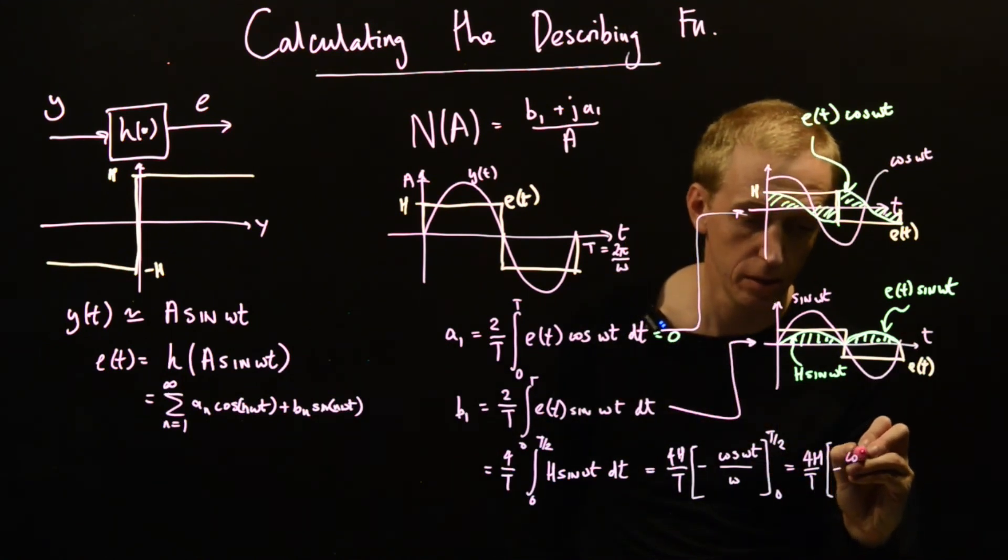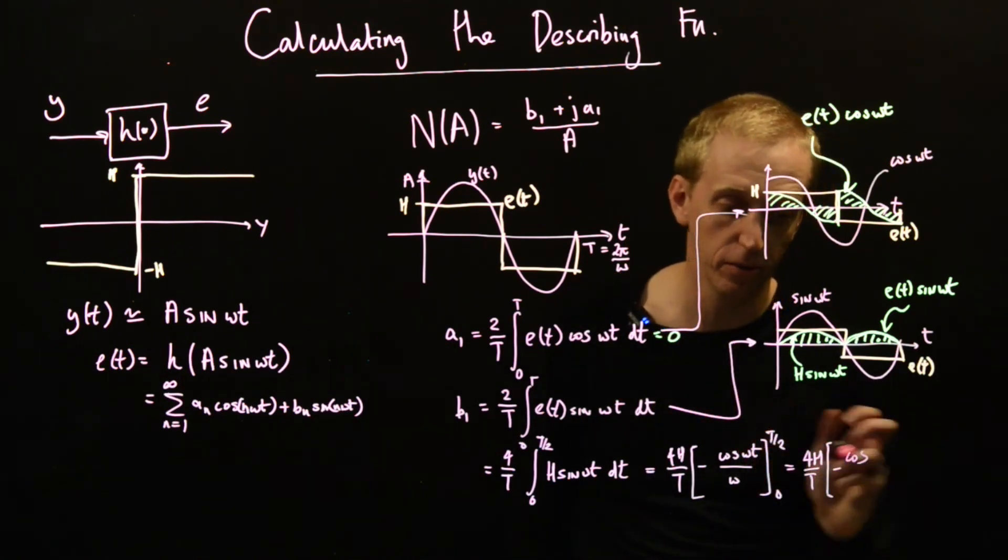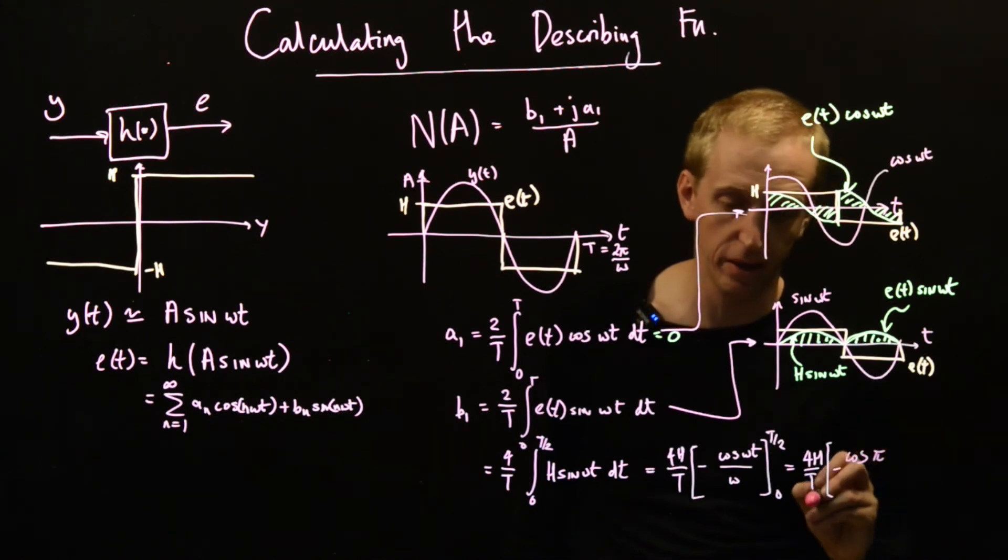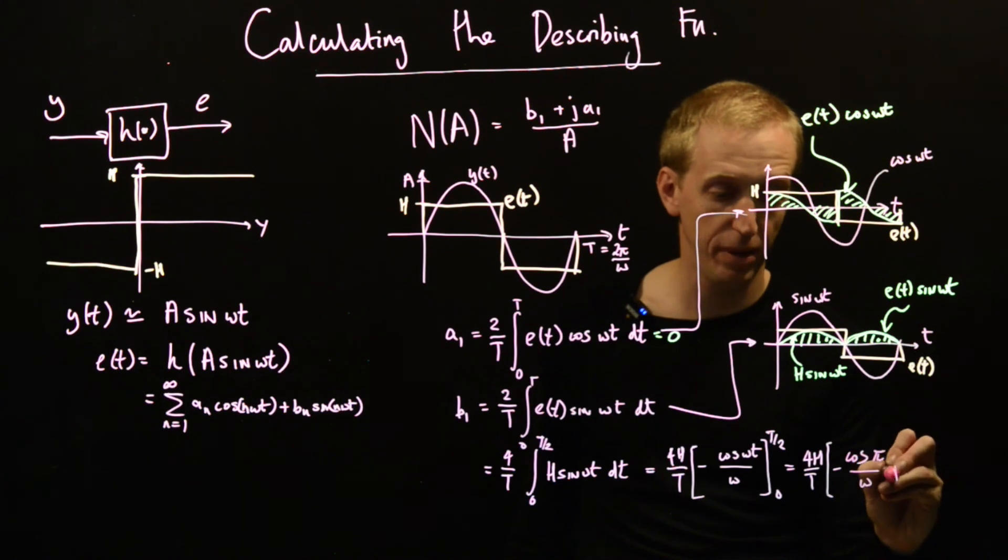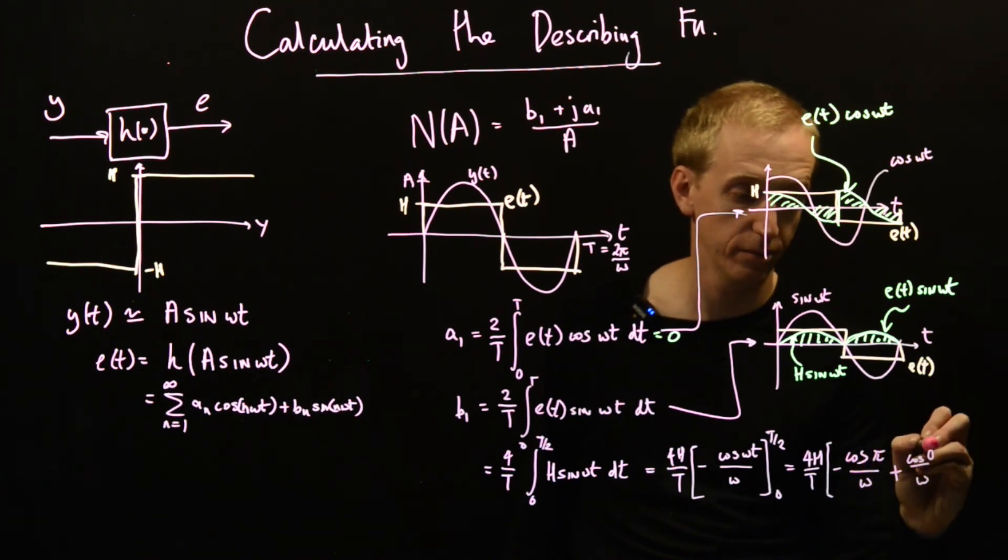All divided by ω. And then plus cos(0) over ω.